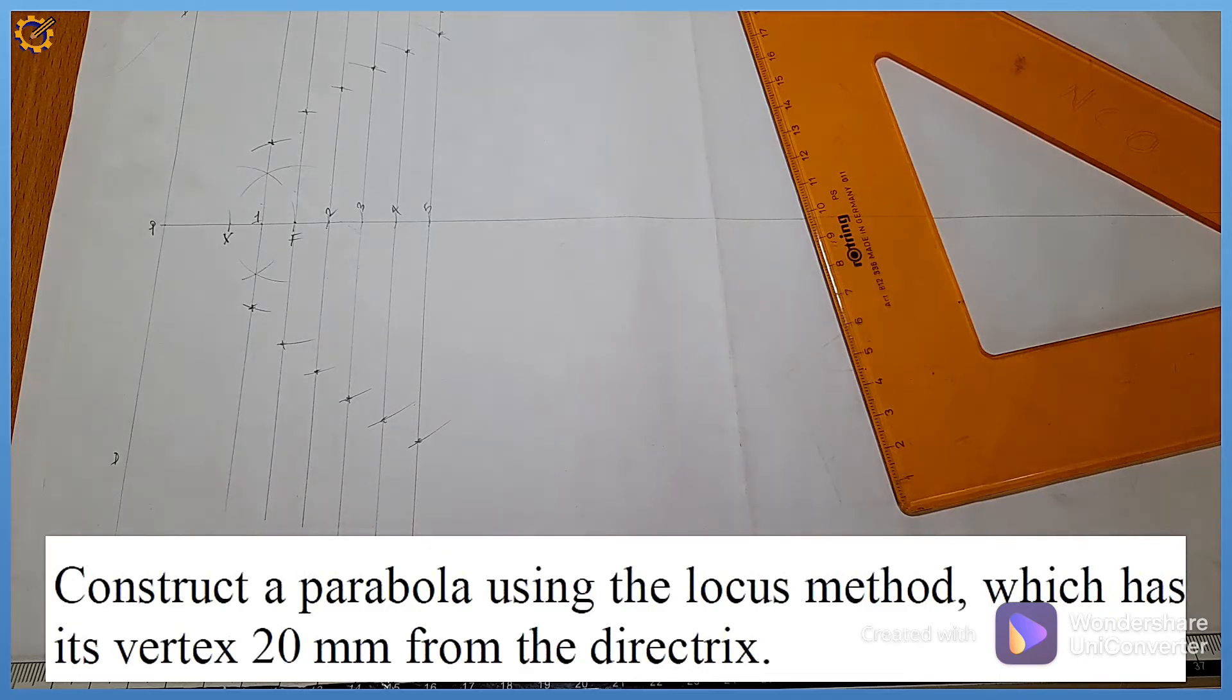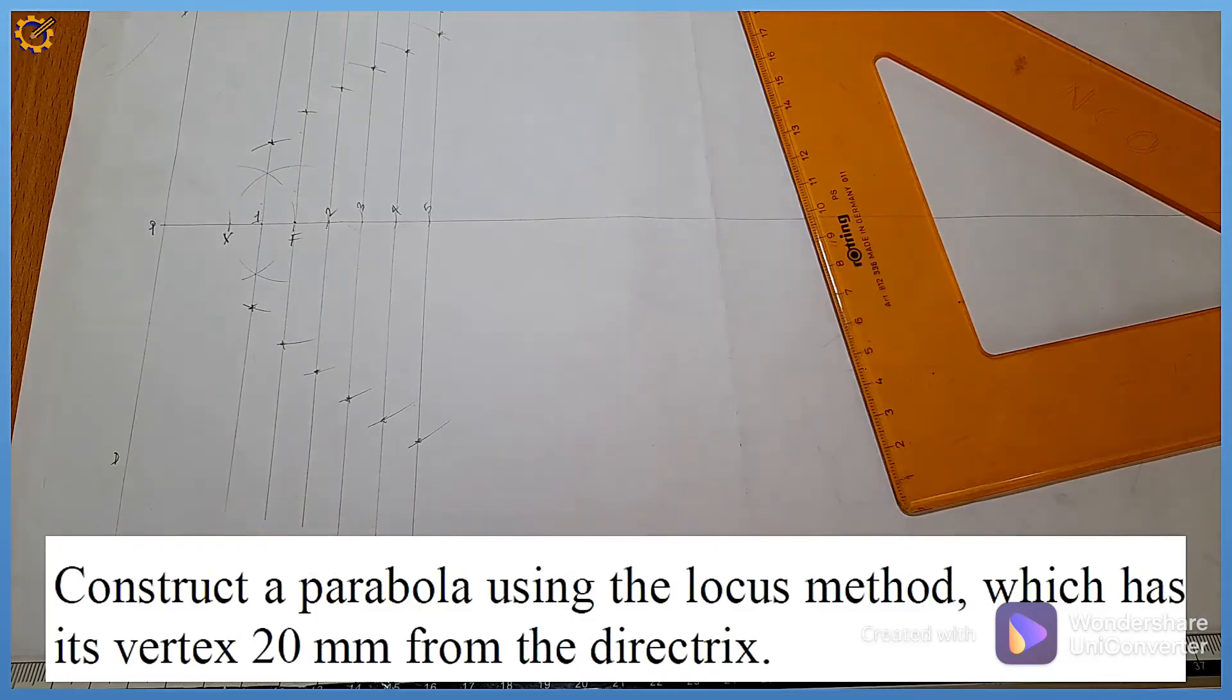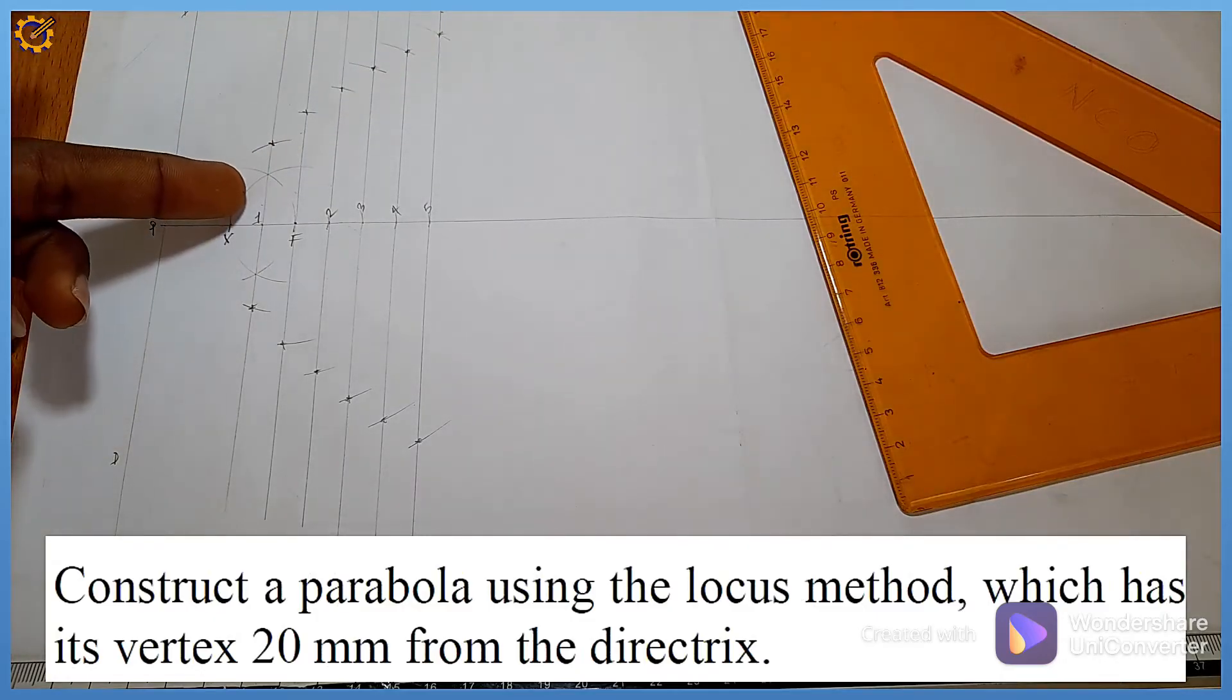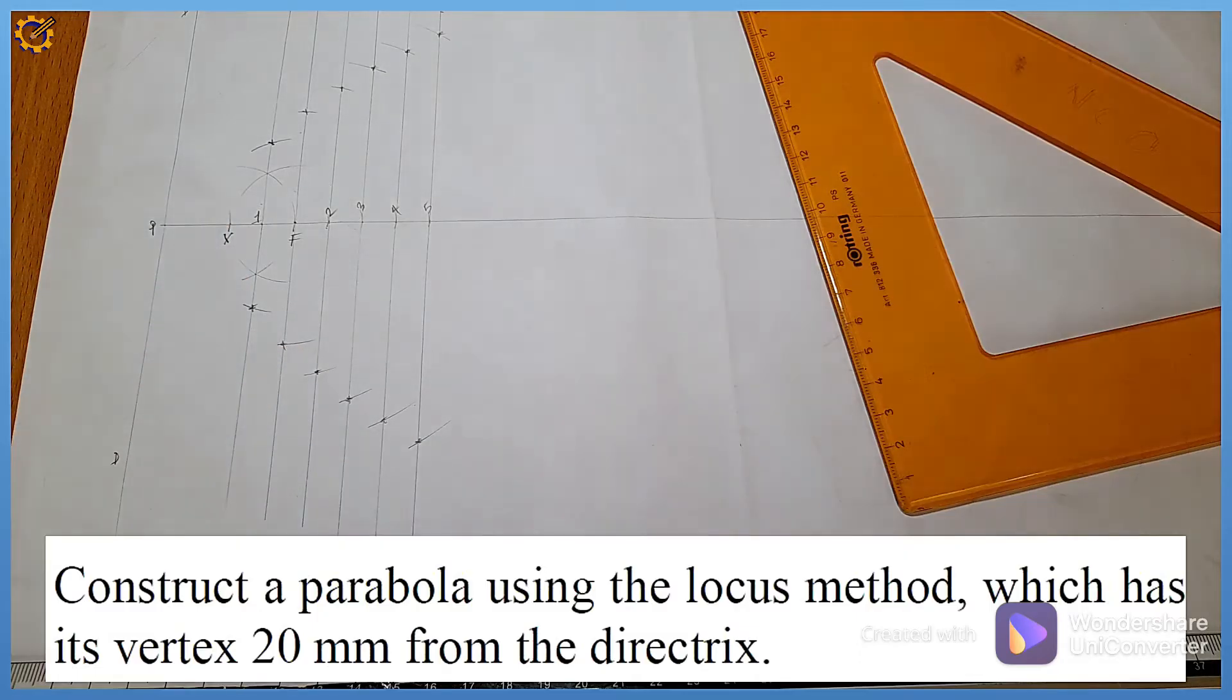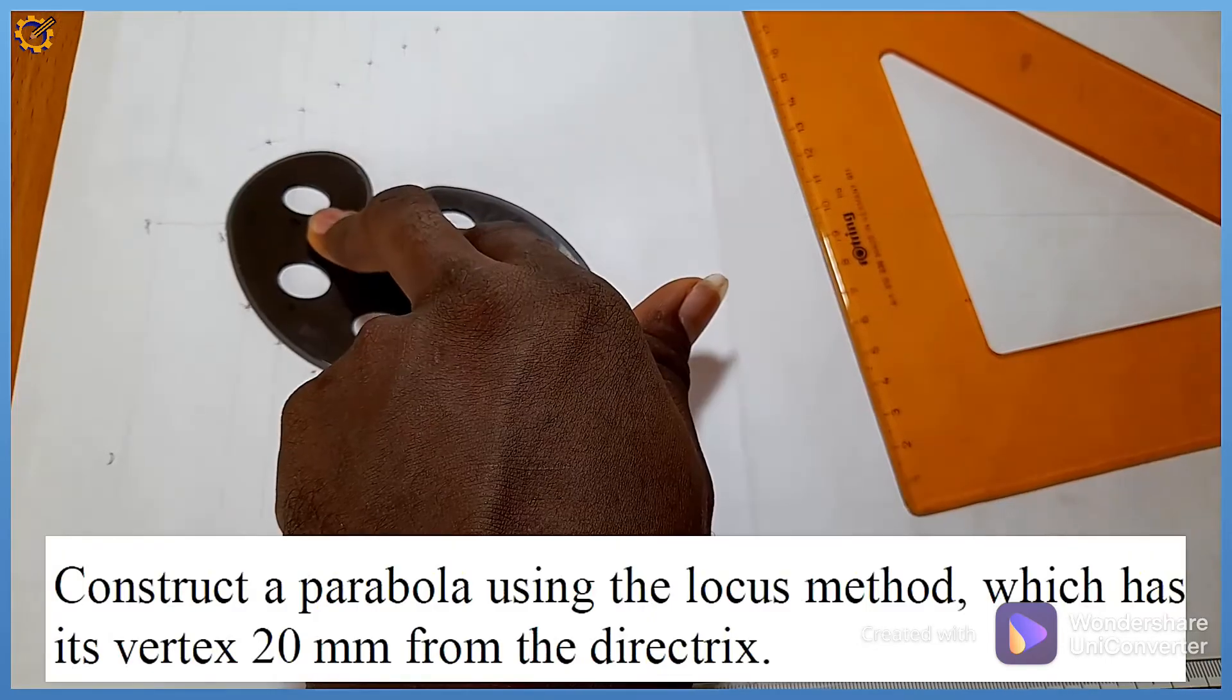The next procedure is to pick my French curve and draw out the parabolic curve. My parabolic curve is going to start from this area, then it's going to pass through the vertex—vertex is the highest point—then come down here. I either use a French curve or a flexible curve.